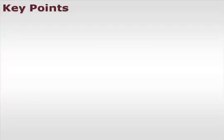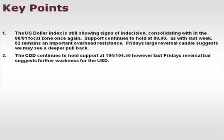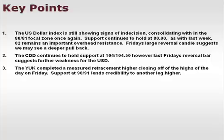Let's take a look at some of our key points. The U.S. dollar index is still showing signs of indecision, consolidating within the 80 to 81 focal zone. Support continues to hold at 80. As with last week, 82 remains an important overhead resistance. Friday's large reversal candle suggests we may see a deeper pullback. The CDD continues to hold support at 104 to 104.5. However, last Friday's reversal bar suggests further weakness for the U.S. dollar. The YUK completed a measured retracement higher, closing off of the highs on Friday. Support at 90 to 91 lends credibility to another leg higher.